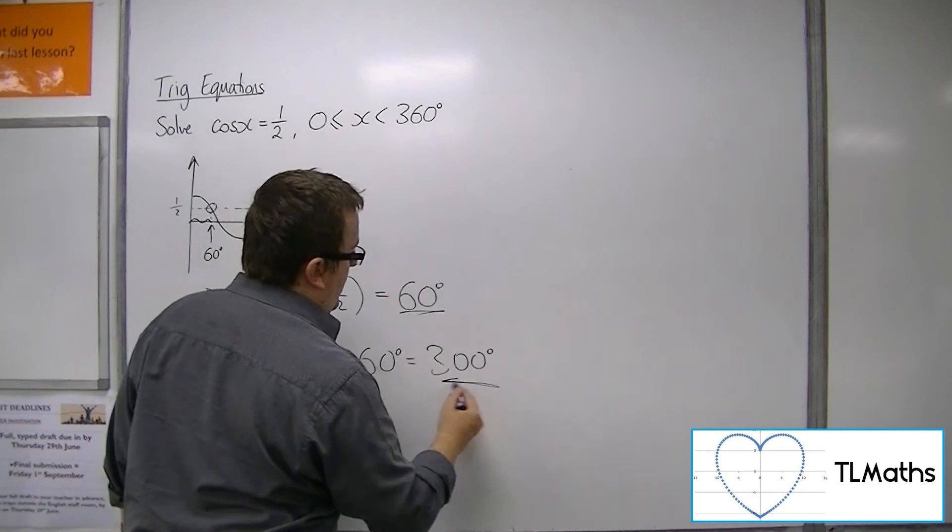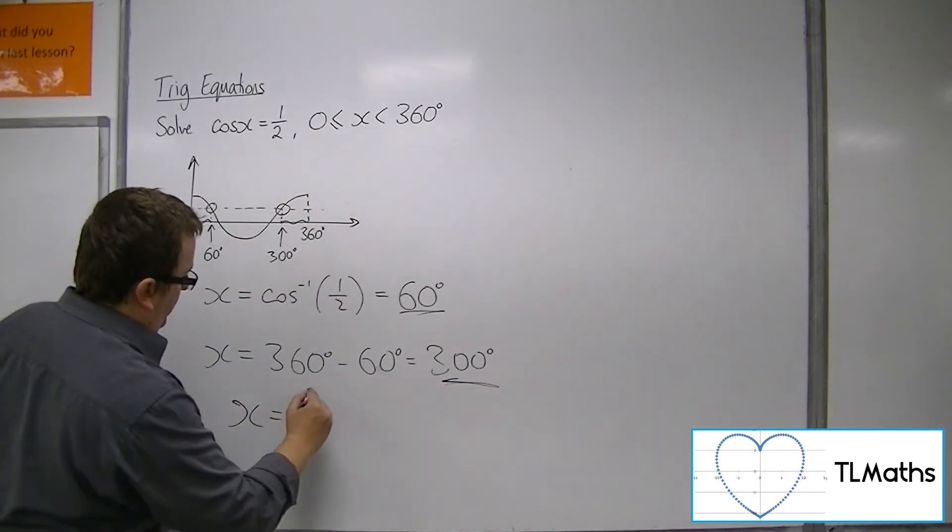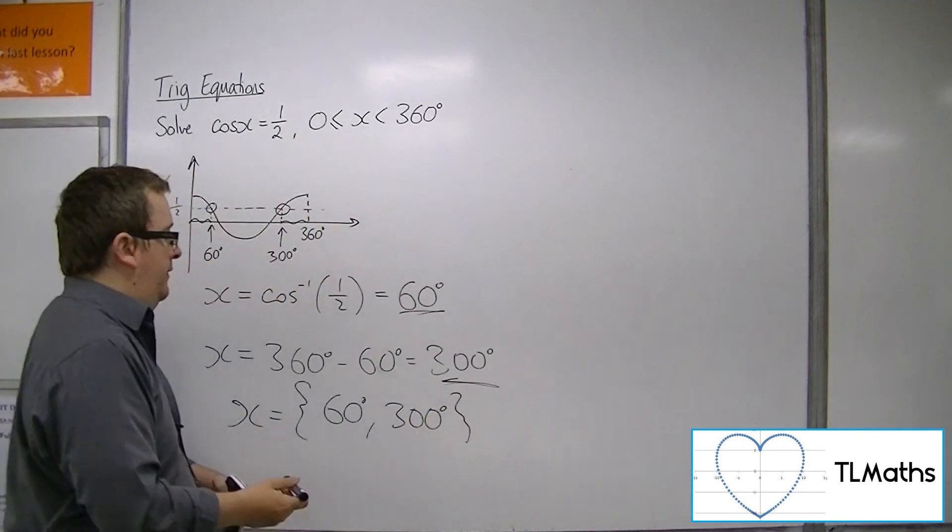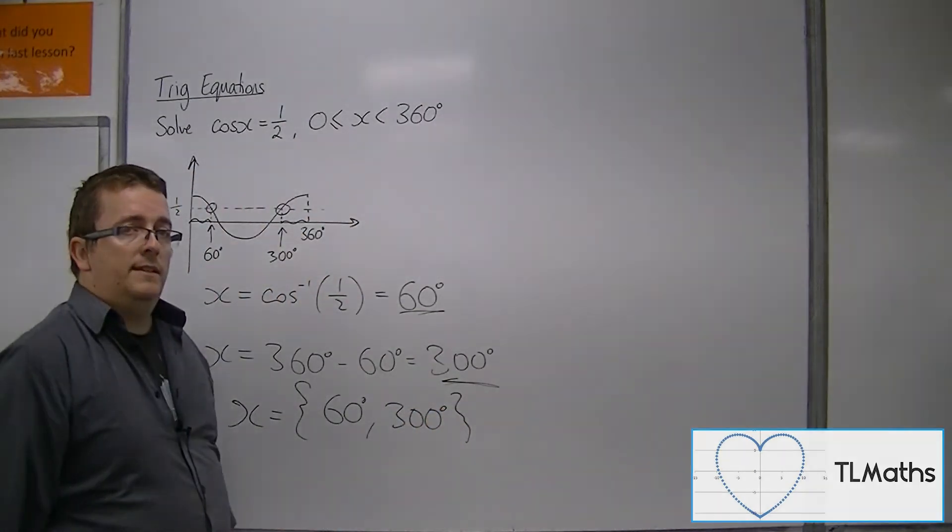So there are your two solutions. x is 60 degrees and 300 degrees between 0 and 360. Thank you.